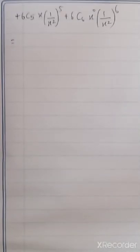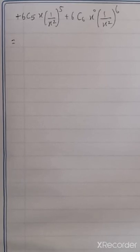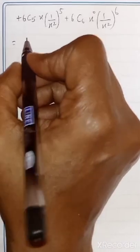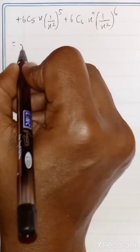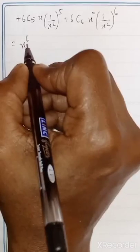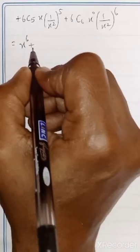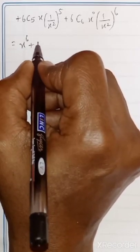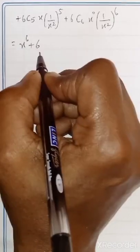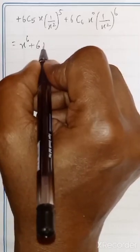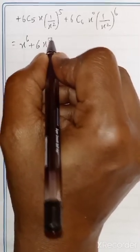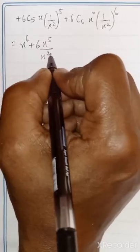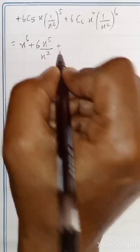Now simplify: X power 6 stays as is. For the second term: 6C1 is 6, giving 6 into X power 5 by X power 2, which simplifies. For 6C2: 6 into 5 divided by 1 into 2 equals 15. For 6C3: 6 into 5 into 4 divided by 1 into 2 into 3 equals 20, giving 20 X power 3 by X power 6.